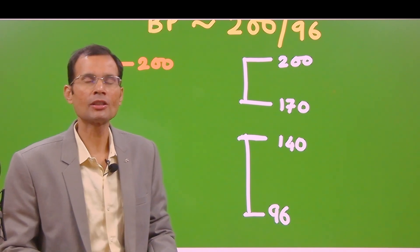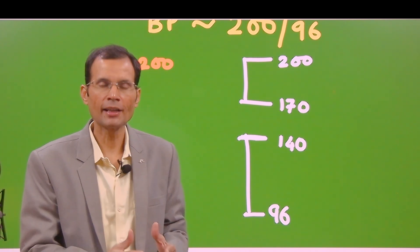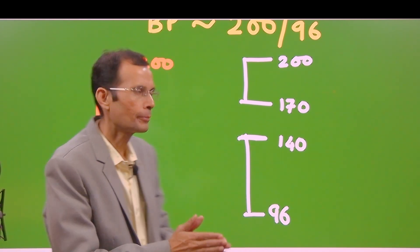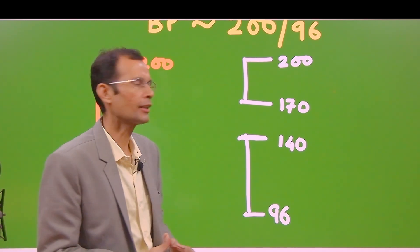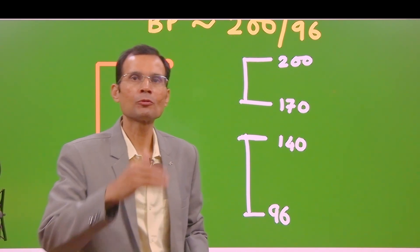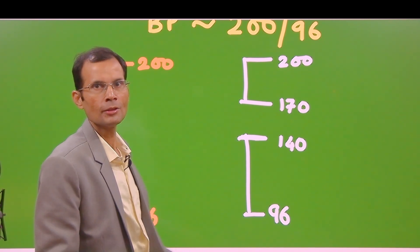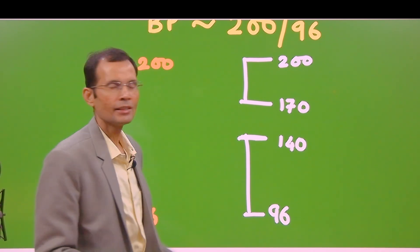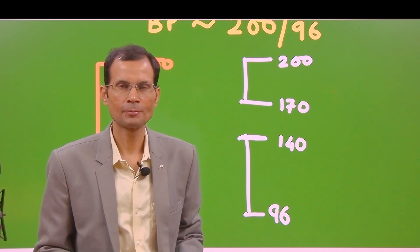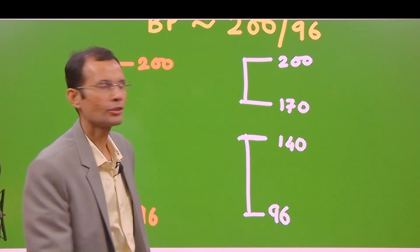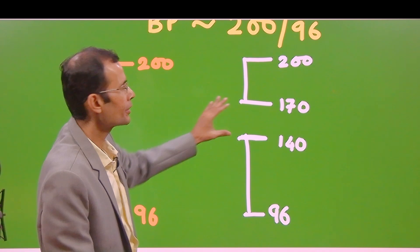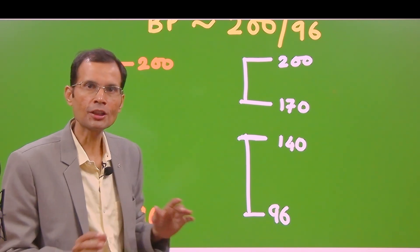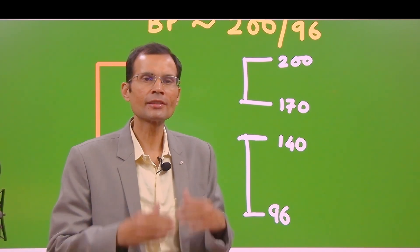Now assume this patient has a silent gap or auscultatory gap. During blood pressure measurement, the sounds disappear, then reappear, and finally disappear again. In this hypothetical example: the cuff pressure is raised and then lowered. The first sound appears at 200, then sounds disappear at 170, sounds reappear at 140, and finally disappear at 96. Because of the silent gap, there were no sounds between 170 and 140 — this gap in the Korotkoff sounds is called the silent gap or auscultatory gap.